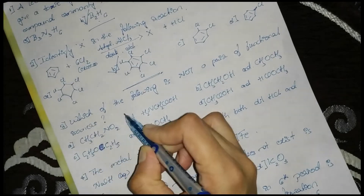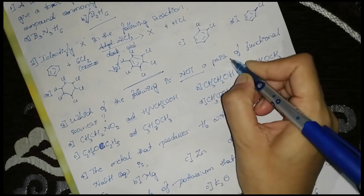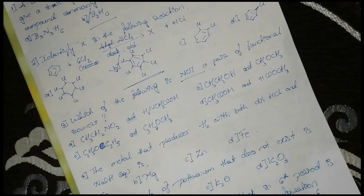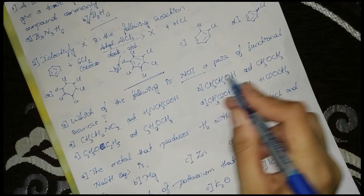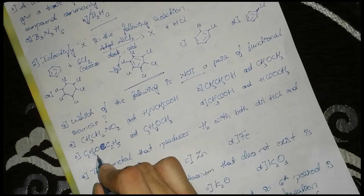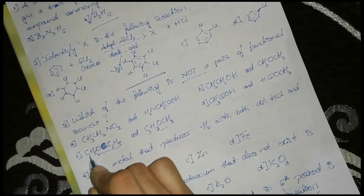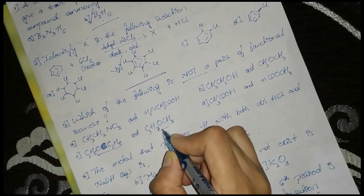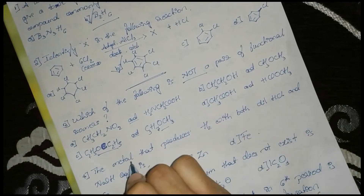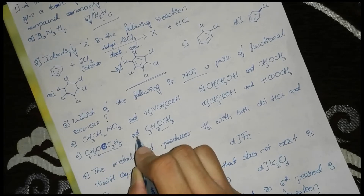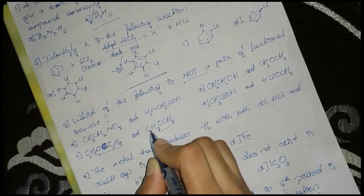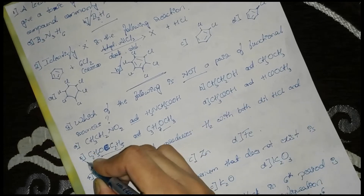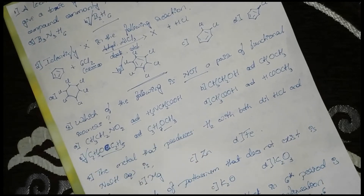Next: which of the following is not a pair of functional isomers? The pair C2H5O and C2H5 — C3H7O and CH3 — these have the same functional group, so they are not functional isomers but metamers. Option C is the correct answer.